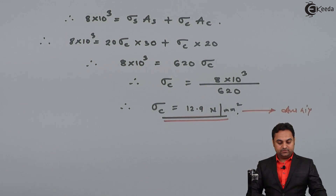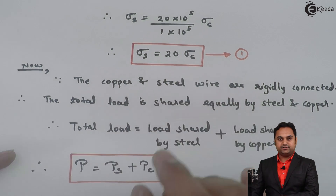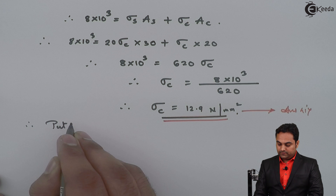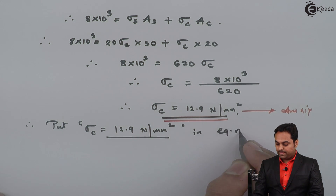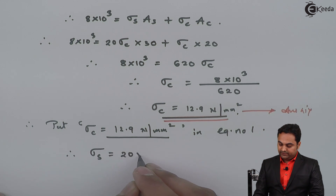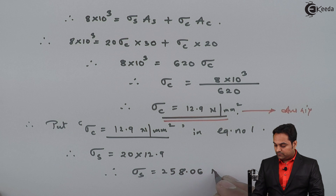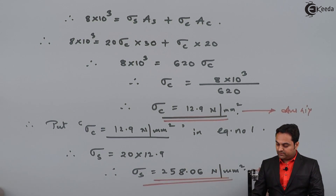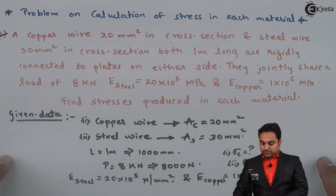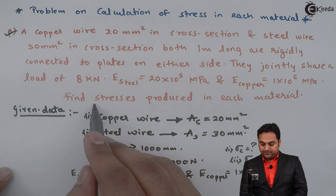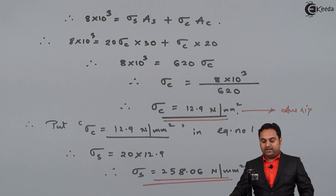Now, putting the value of sigma C into equation number 1, where sigma S equals 20 into sigma C, we substitute sigma C equals 12.9 Newton per mm square. Therefore, stress in steel is 20 into 12.9, which comes out to be 258.06 Newton per mm square. This is the second answer. The question asked us to find stresses in each material — copper and steel — and we have calculated both individual stresses, completing the question.